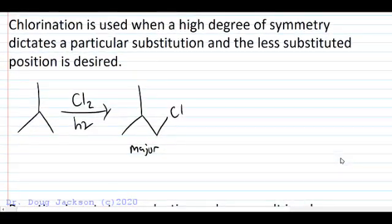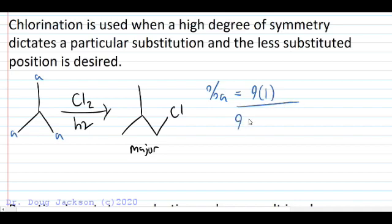Looking at chlorination, when is it most useful? When there's a high degree of symmetry in the compound, it will dictate a particular substitution, particularly when the less substituted position is required or desired. Here we have a compound that has one, two, and three equivalent methyl groups. So nine hydrogens of type A times a one-to-one probability. Then we can take those nine and get the total probability with this tertiary position here. What's our substitution rate?